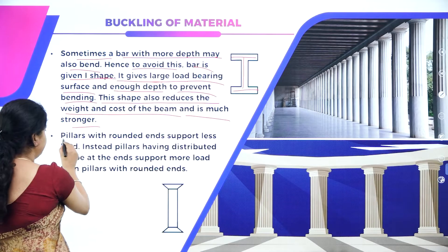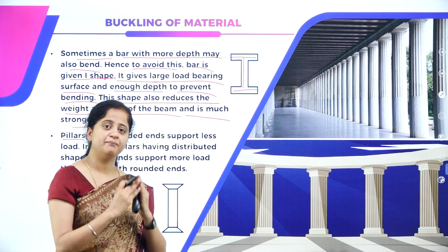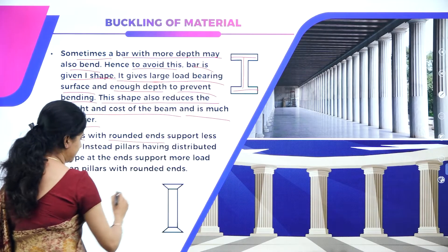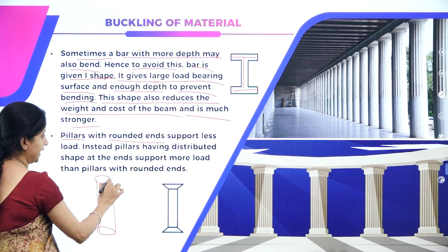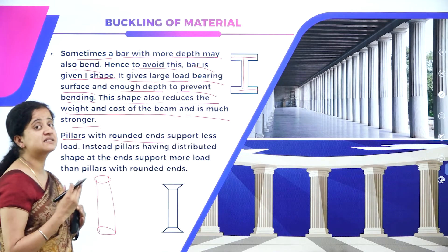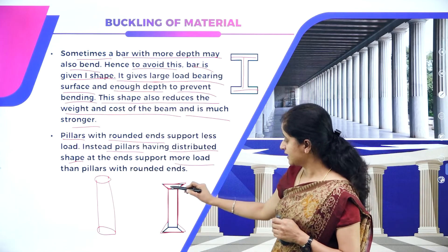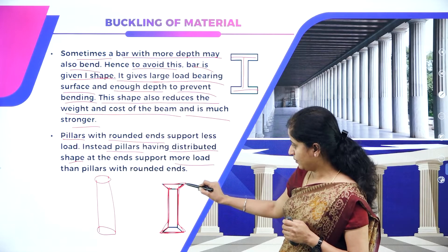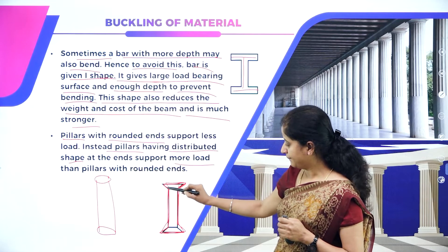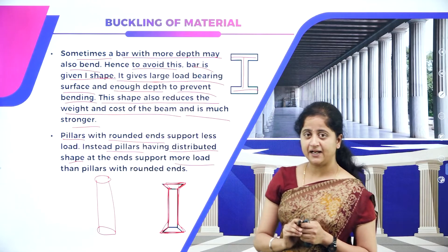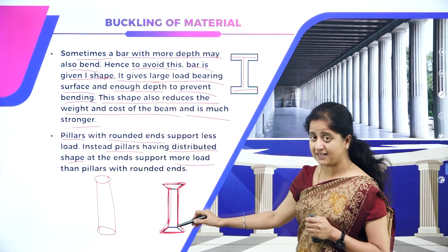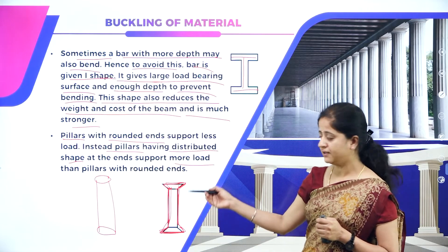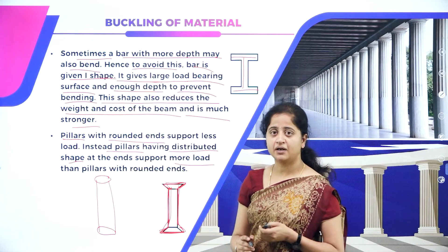Pillars also play a major role in construction. Pillars with rounded ends support less load. To overcome this disadvantage, pillars with distributed shape at the ends are preferred — they support more load than pillars with rounded ends.